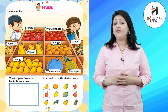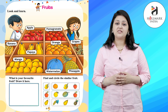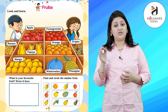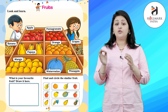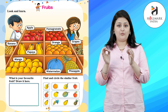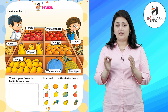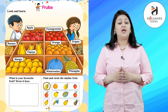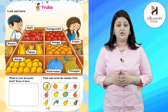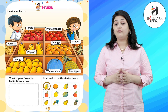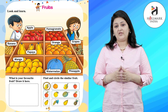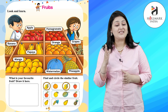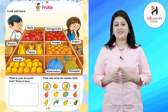Now, find and circle the similar fruit — the one that looks the same. Let's start with the first picture. In the first picture, we have a mango. So, let's circle the similar fruit.